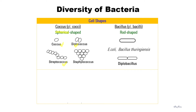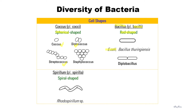The next shape is bacteria in rod shape, called bacillus or bacilli. Typical examples are E. coli and Bacillus thuringiensis. Some bacillus bacteria are found in pairs, and they will be called diplobacillus. The next shape is bacteria in spiral form, which is spirillum or spirilla. An example is Rhodospirillum species.